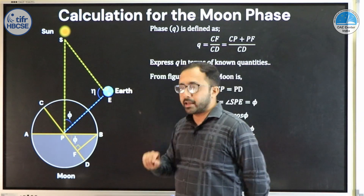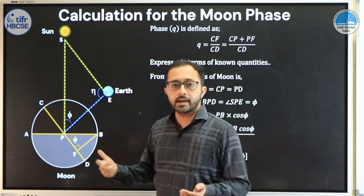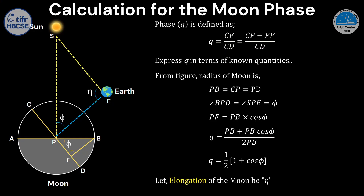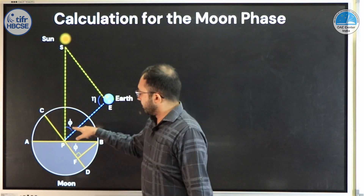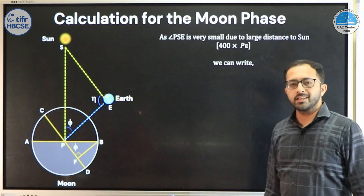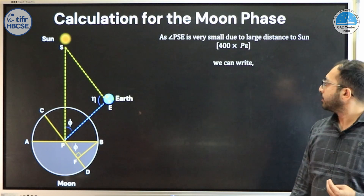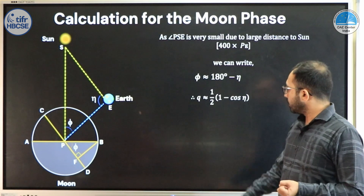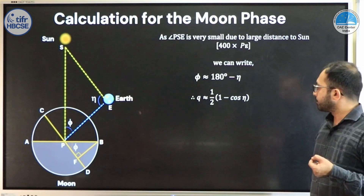Remember, measuring phi is difficult because it is the angle made at the moon. What is easier to measure is the elongation eta — the angular separation between the moon and sun as seen from earth. In the triangle SPE, phi and eta are present, but the angle at the sun (angle PSE) is very small because the distance between earth or moon and the sun is extremely large. So we write the approximation: phi ≈ 180° − eta. Substituting, Q is approximately equal to ½·(1 − cos(eta)).